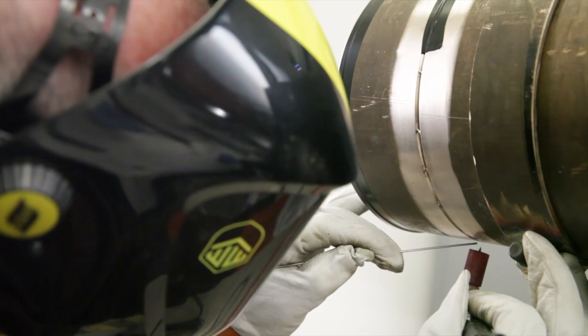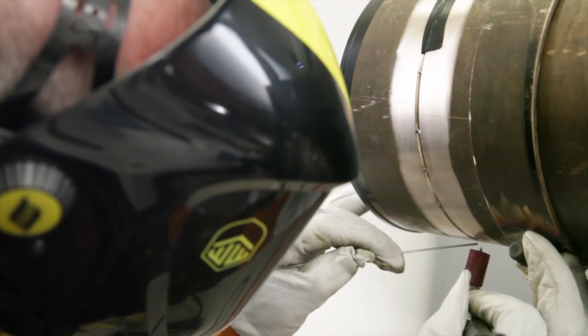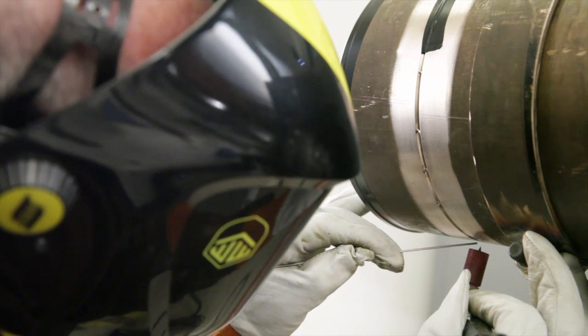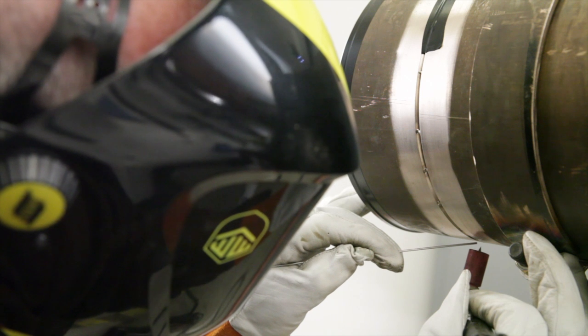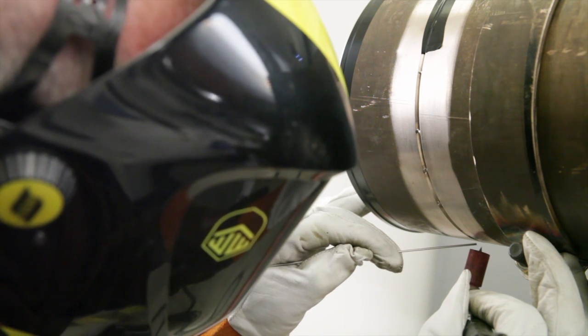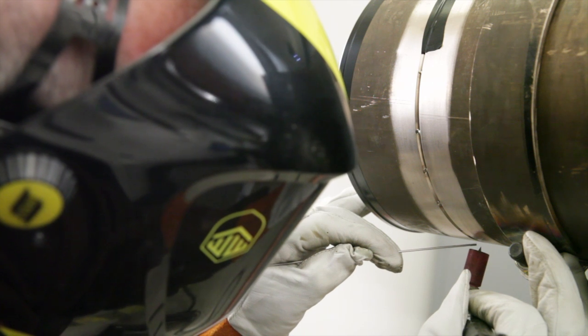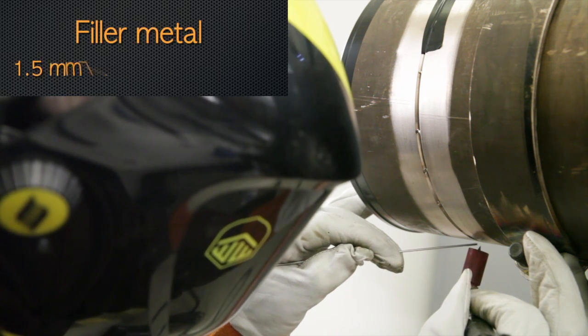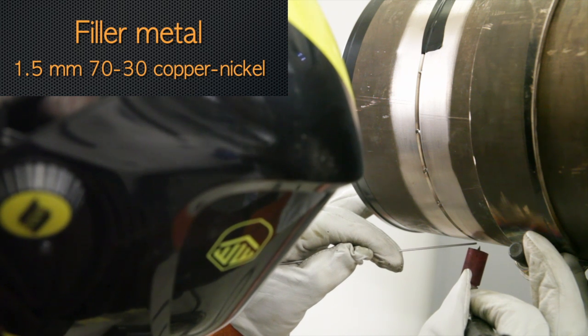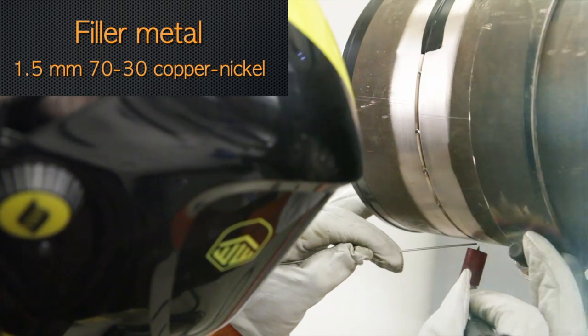We're about ready to start welding. You'll notice that we have a gas cup that's a little bit larger than you might use on stainless steel. It needs to be big enough to get good gas coverage and yet small enough not to interfere with the welder's vision of the puddle. We're using 1.5 millimeter diameter 70-30 copper nickel filler metal.